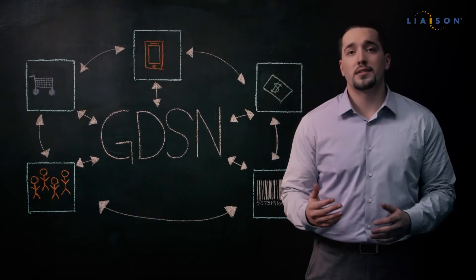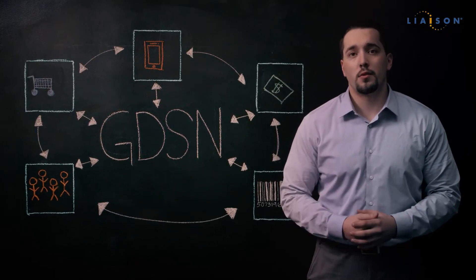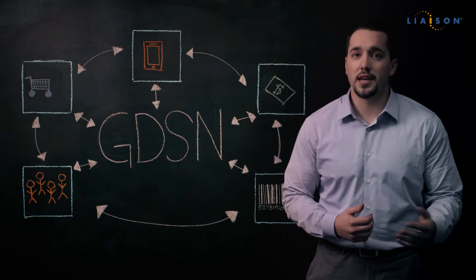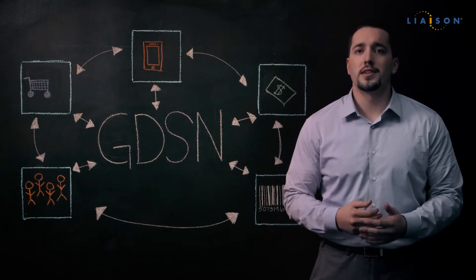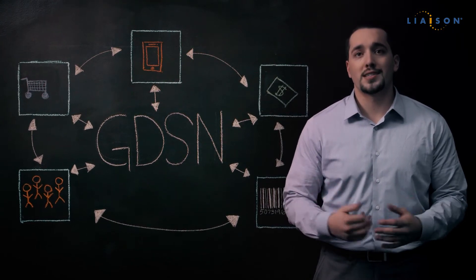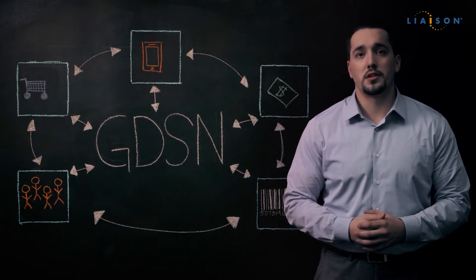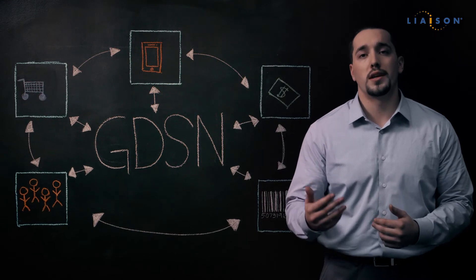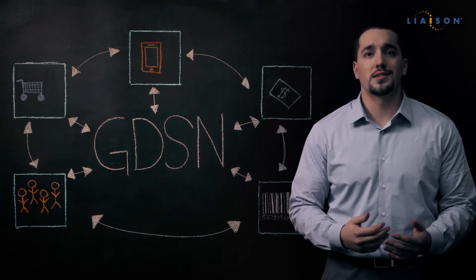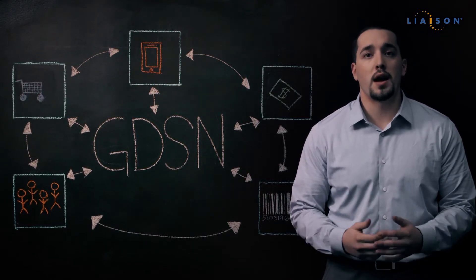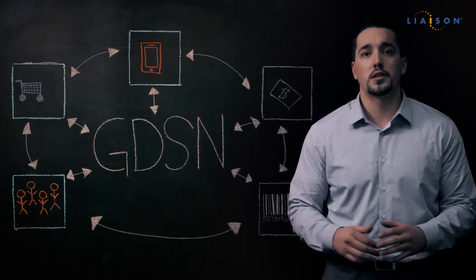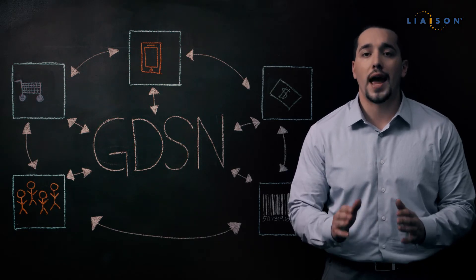The Global Data Synchronization Network, also known as GDSN, provides an automated method to synchronize item information with suppliers according to global industry standards by utilizing the same format for all trade items and all parties to improve accuracy.